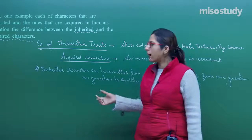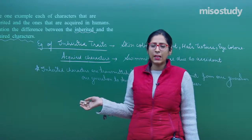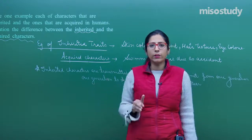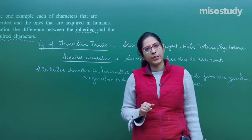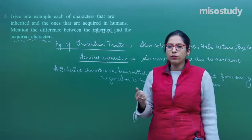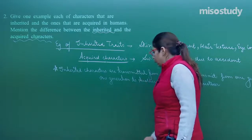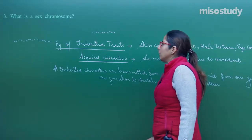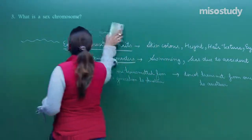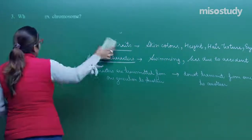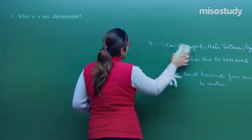This is a one mark question, so you have to give only one or two points — no need to go into detail. You can mention points from what we have discussed regarding the difference between inherited and acquired character. Let's talk about question number three, which is again of one mark. The question states: What is a sex chromosome?